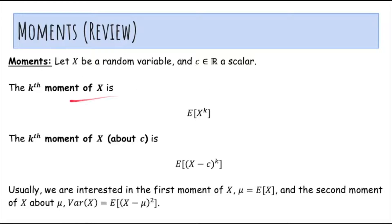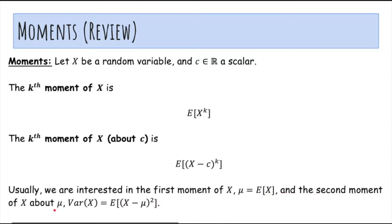As a recap, what is a moment? If x is a random variable and c is a scalar, then the kth moment of x is just the expected value of x to the kth power. And the kth moment of x about c is the expected value of x minus c to the kth power. For example, we're often interested in the first moment of x, which is just the expected value of x, or the mean, and the second moment of x about the mean, which is the variance of x, or E of x minus mu squared.